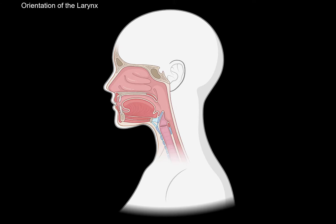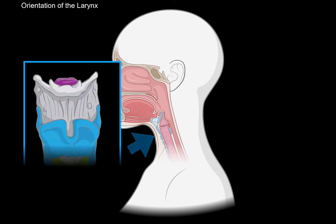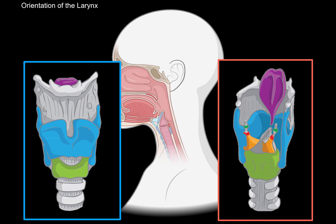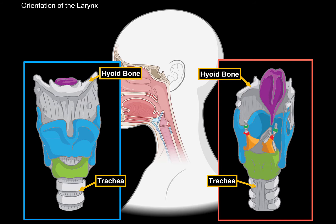Let's continue with the orientation by looking at the larynx from different angles. If you look at it anteriorly, this is how the larynx is going to look like. And if you look at the larynx posteriorly, this is how it's going to look like. Notice the hyoid bone above the larynx, and the trachea under it.